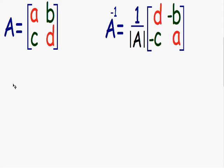In this video, we're going to find the inverse of a 2 by 2 matrix. So let's say we have the matrix A, and inside the matrix we have the numbers A, B, C, and D. Then the formula for the inverse of this matrix A is going to be equal to 1 over the determinant of matrix A. The symbol that looks like the absolute value means the determinant of matrix A.